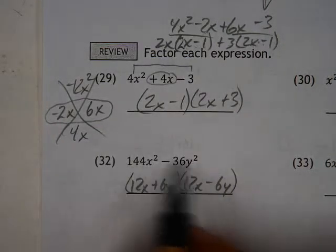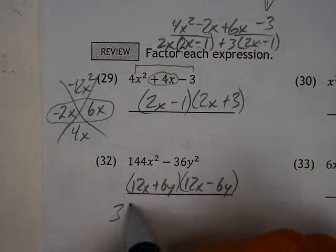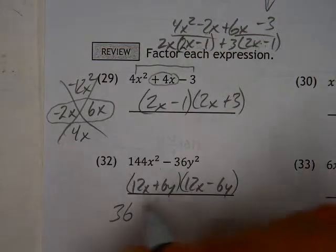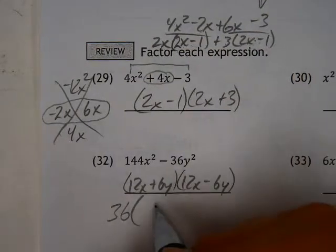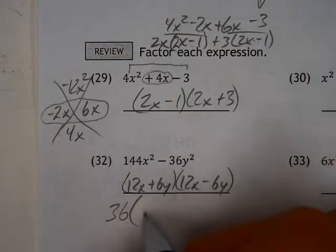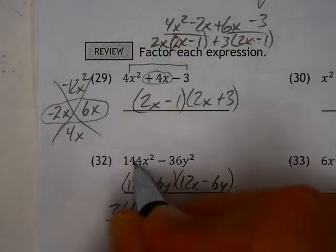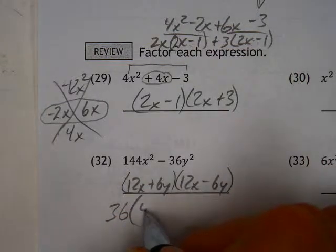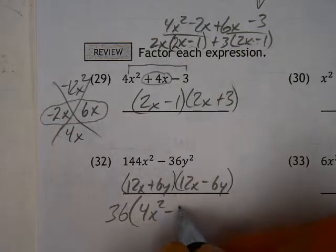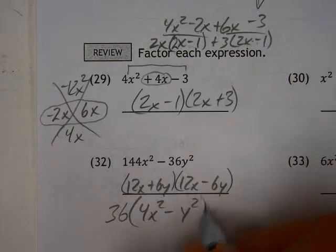Turns out, if you take a 36 out of here, it'll still factor further, and so it's another way of looking at this. 36 goes into 144 four times, so that's 4x squared minus y squared, basically.